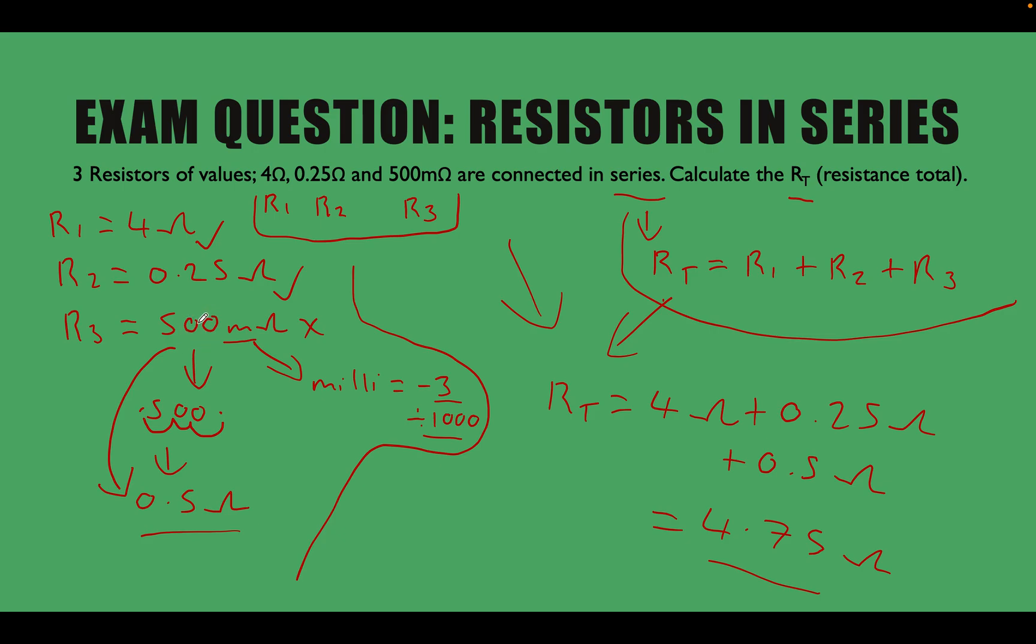So all we've done is convert it down from milliohms to ohms in order to use in our calculation. Then all we had to do was input our values into our formula that we put down first. So the resistance total in this circuit is equal to 4 ohms plus 0.25 ohms plus 0.5 ohms, and that's equal to 4.75 ohms.